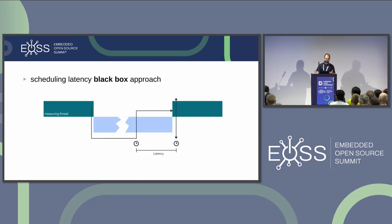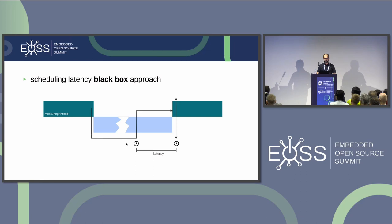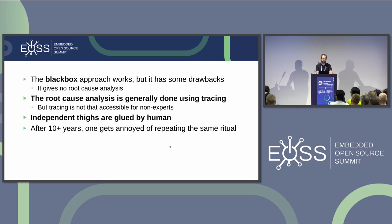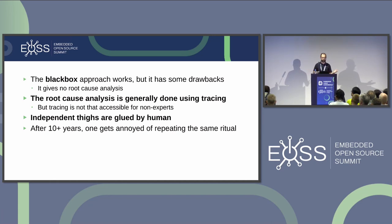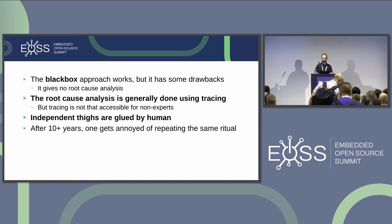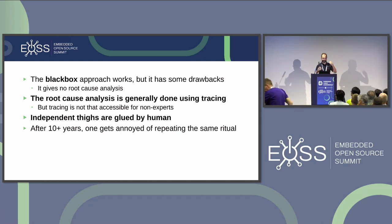The way black-box tools like CyclicTest work is: they arm a timer in the future using an external clock reference; when the timer fires, the highest-priority thread is awakened; when this thread starts running, it reads the time again and measures the latency. We can't say this approach doesn't work — we've been developing preempt RT this way and the results are good. It just gives no root cause analysis and doesn't do that next step.